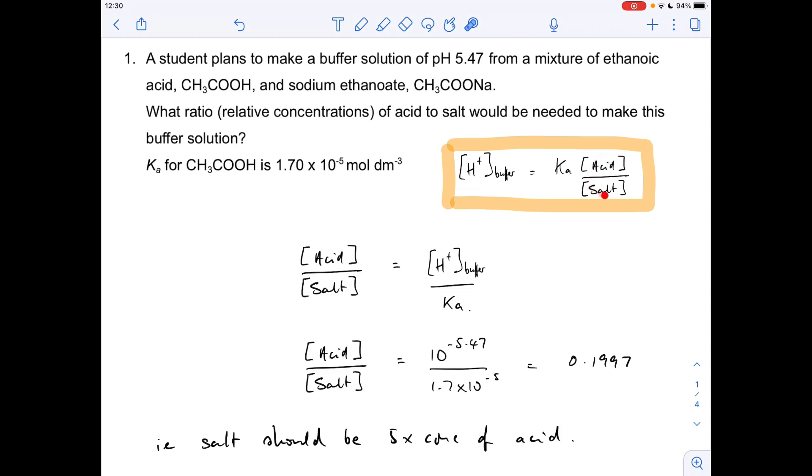Okay, so what we're after is this relative concentration ratio here. So if we isolate that and get the Ka out of the way so it goes under H+ concentration, we get this expression. And then all we need to do is put in the values for H+ and Ka. So if we've got the pH, the H+ concentration of the buffer is 10 to the minus pH, divided by that Ka value, and that gives an answer of 0.1997, effectively 0.2.